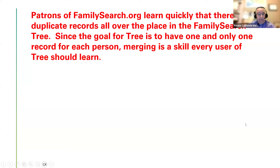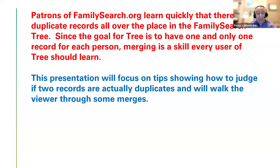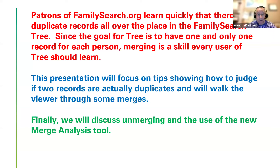A long time ago, I thought merging was going to go away — eventually we'd get all the duplicate records and get rid of them. Well, unfortunately, it seems like every day there's a new set of duplicate records. So this is a process that's going to be around probably forever. In this presentation, we'll focus on how to judge if two records really are duplicates and need to be merged, then discuss how to unmerge or undo merges that have already been done, and use the new merge analysis tool that FamilySearch has developed.